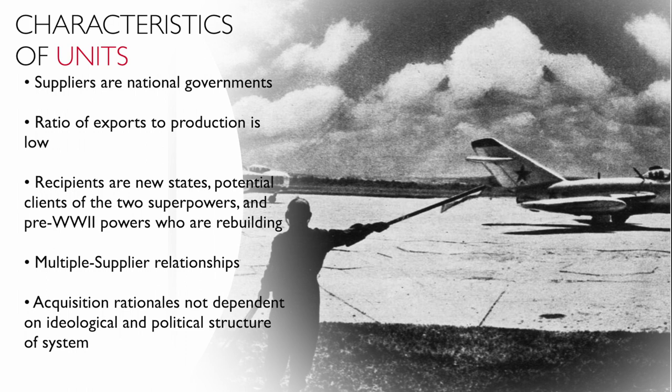Lawrence also finds that recipients are new states and potential clients of the two superpowers. The world is also going through a process of decolonization, so the majority of Africa and the Middle East is being relinquished of control by their old European powers. You have a lot of these incoming new states that Russia and the U.S. are really trying to court and get on their side. The majority of recipients during this period are going to be these more developing states, not developed industrial powers — not quite yet.